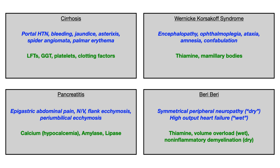For cirrhosis, you might see portal hypertension, bleeding, jaundice, asterixis, spider angiomata, palmar erythema. Labs: elevated LFTs, GGT, decreased platelets or changes in clotting factors. For Wernicke-Korsakoff syndrome, you'll see encephalopathy, ophthalmoplegia, ataxia, amnesia — either anterograde or retrograde — and confabulation. Labs might show thiamine levels or imaging related to the mammillary bodies. For pancreatitis, remember epigastric abdominal pain radiating to the back, nausea, vomiting, chills, flank or periumbilical ecchymosis.